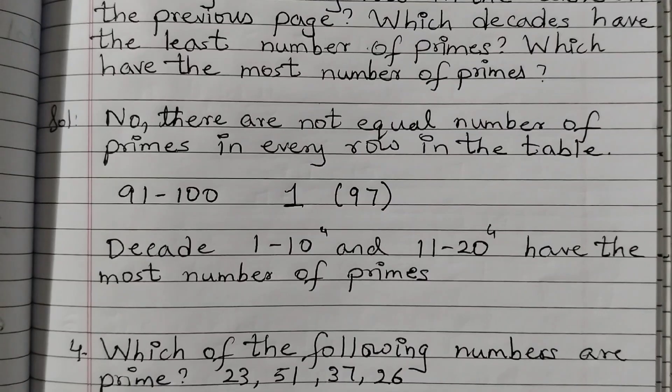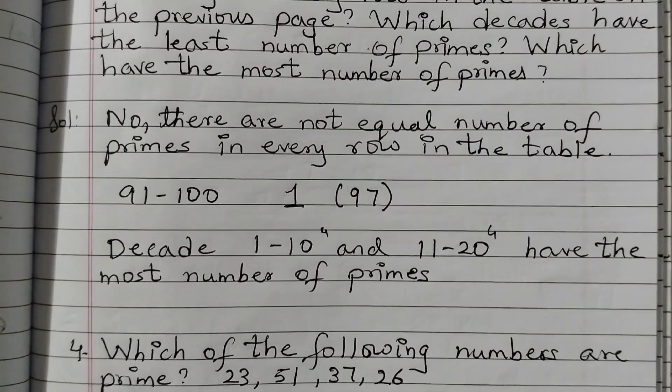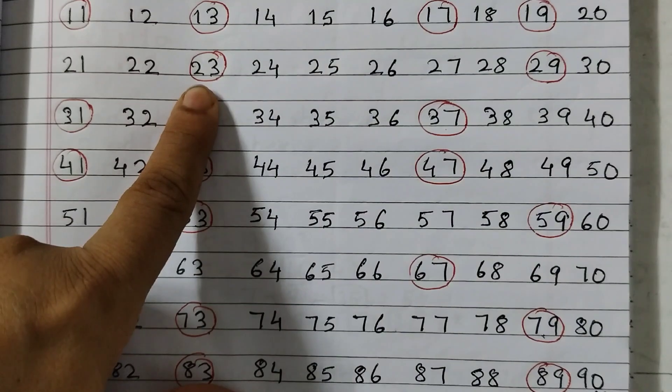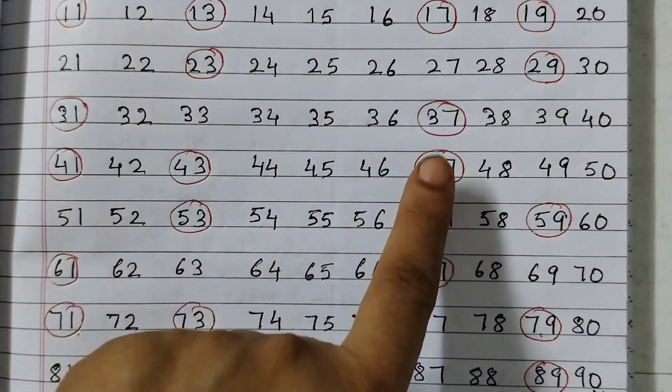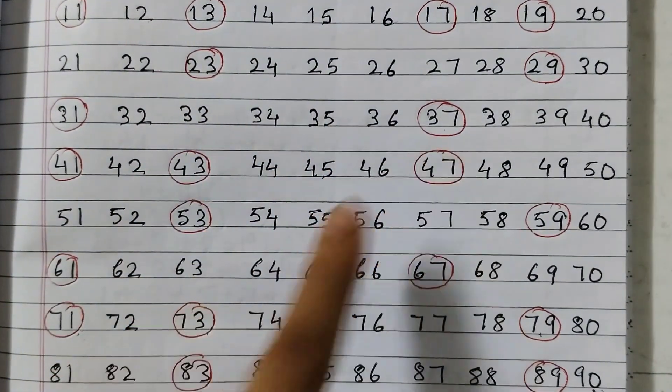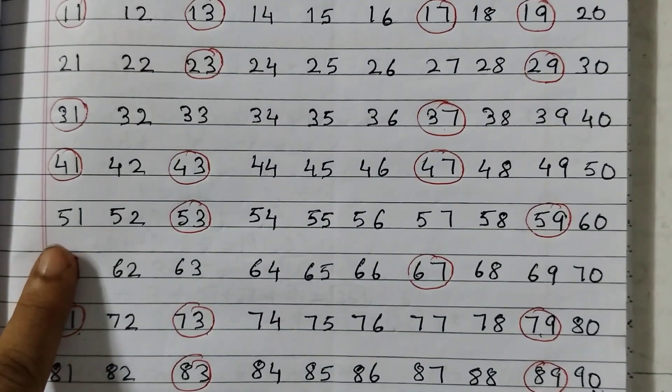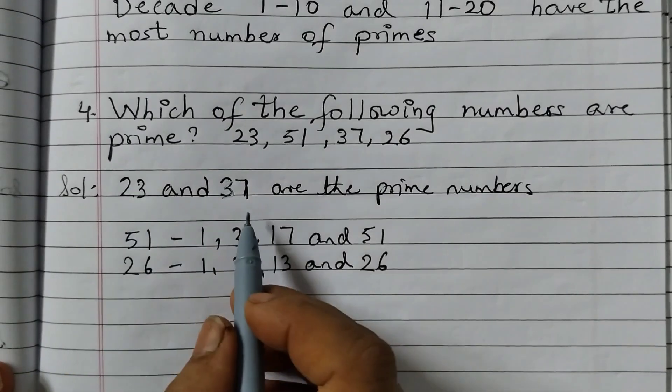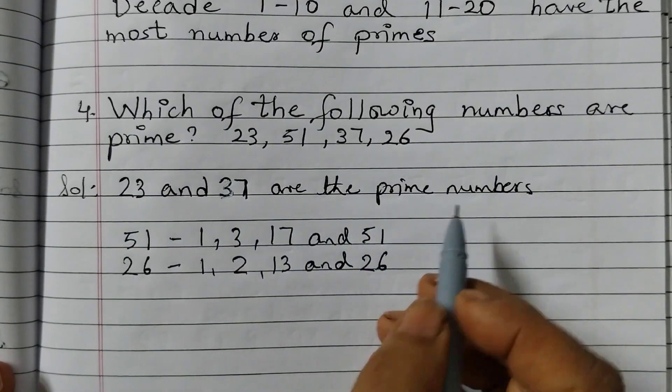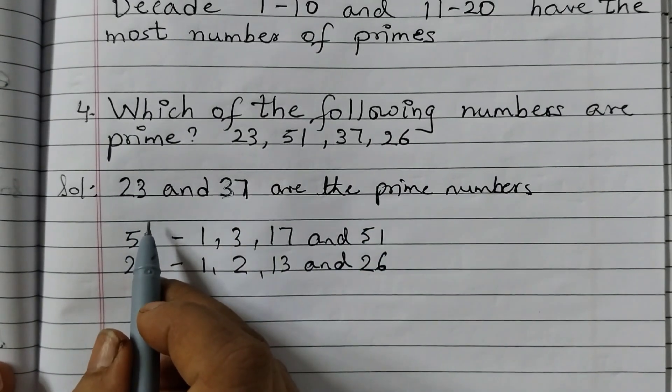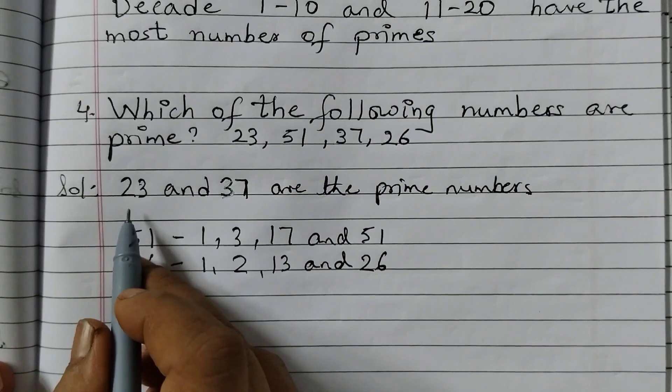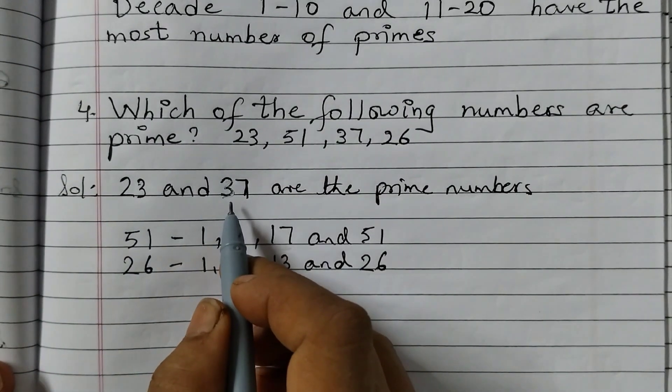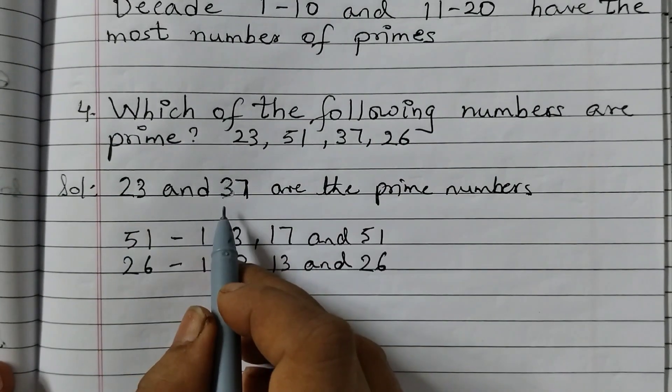For this question also we can refer to the same table of primes. 23 is a prime number, 26 is not a prime number, 37 is a prime number, 51 is not a prime number. So the answer is 23 and 37 are the prime numbers because these numbers have exactly 2 factors. 23 has 1 and 23 itself, that is 1 and the number itself. Similarly, 37 has 1 and 37.